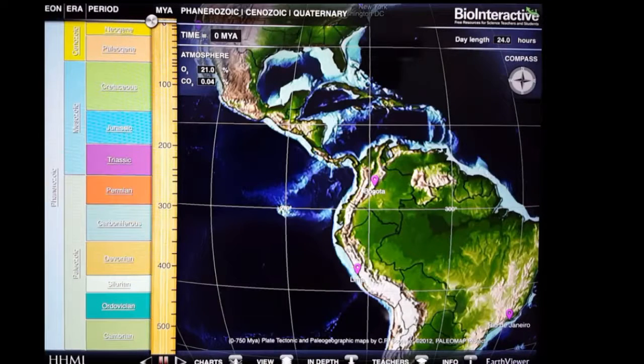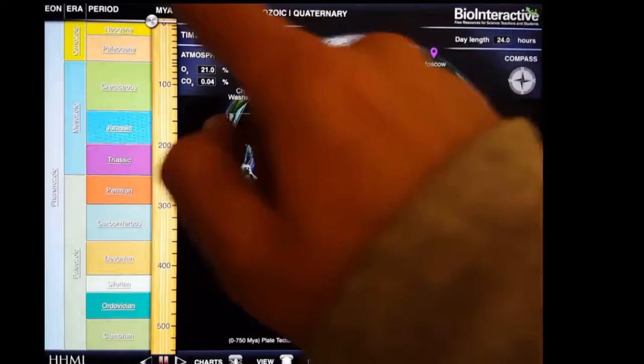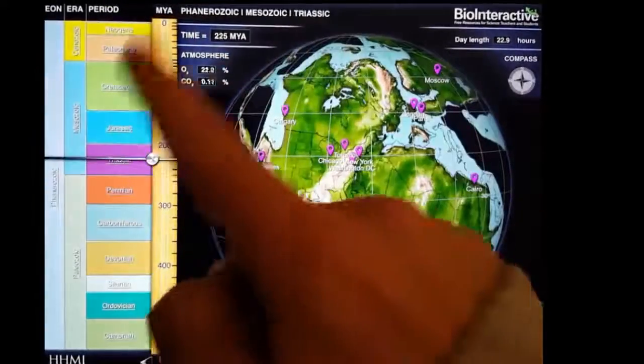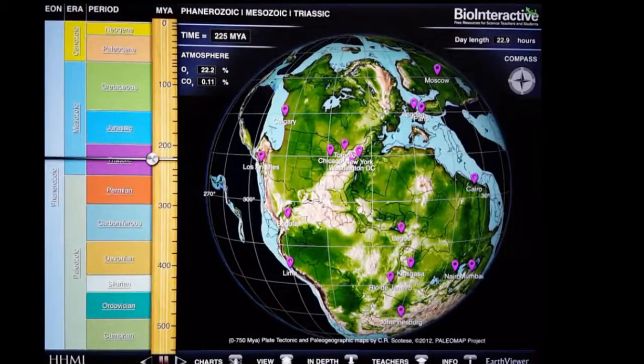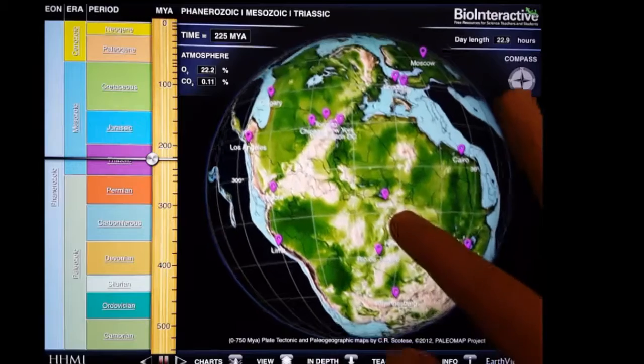On the left-hand side, you'll notice a slider with a scale that reads MYA at the top and has different aeons, eras, and periods labeled. Dragging the slider on that scale will change what time period you're viewing the Earth. The number indicates how many millions of years ago it is that you're viewing the Earth.